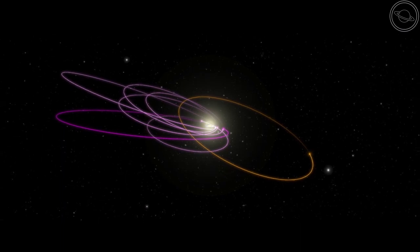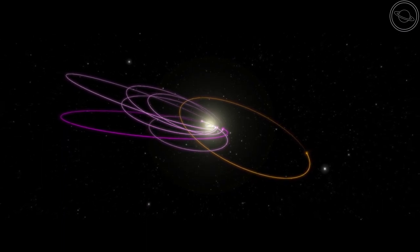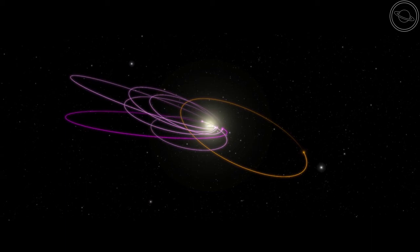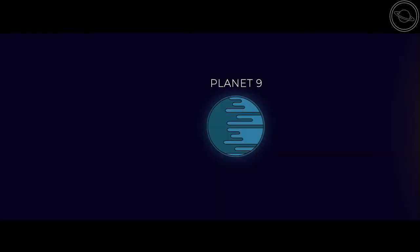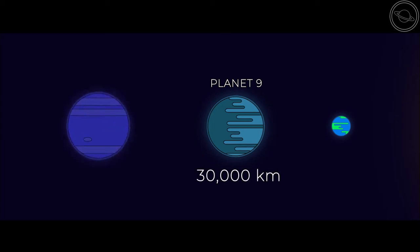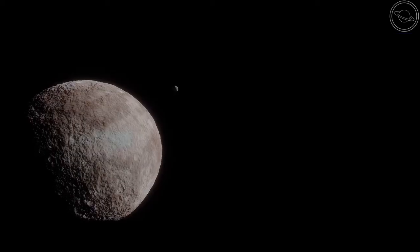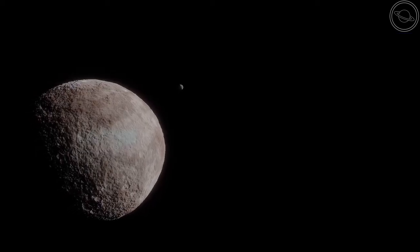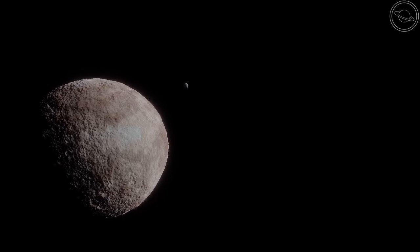Its orbit would be 15 to 25 degrees to the plane of Earth's orbit, similar to the other ETNOs. Its diameter is about 2 to 4 times that of Earth's, or about 30,000 kilometres wide, which would make it the fifth largest planet in the solar system between Earth and Neptune. These values have been attained from the data that the clustered objects gave us, and are only rough estimates.